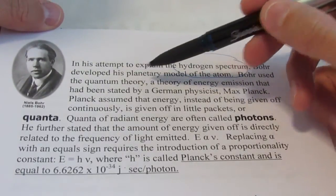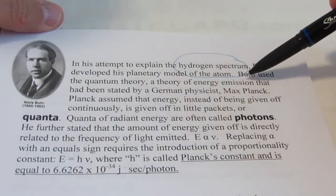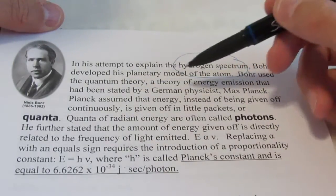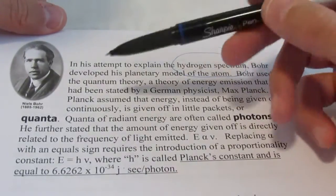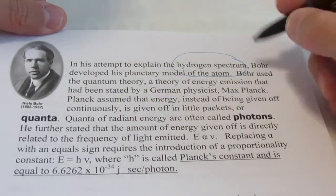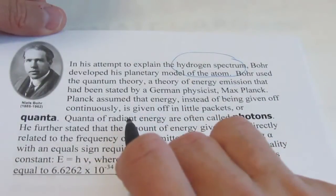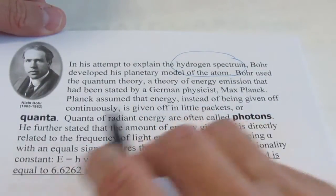Bohr used the quantum theory, a theory of energy emission that had been stated by a German physicist Max Planck. Planck assumed that energy, instead of being given off continuously, is given off in little packets or quanta.